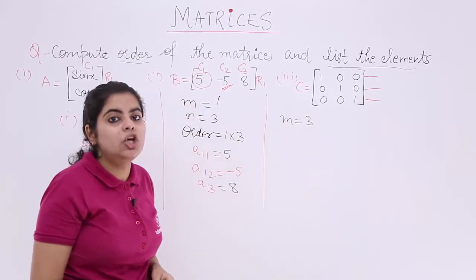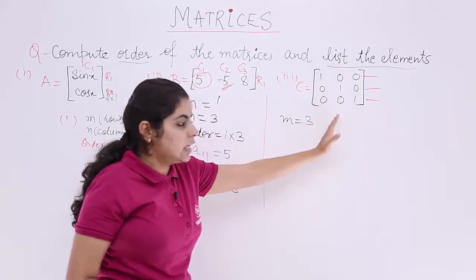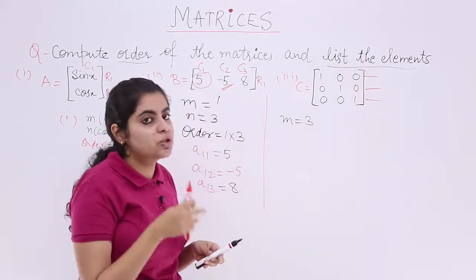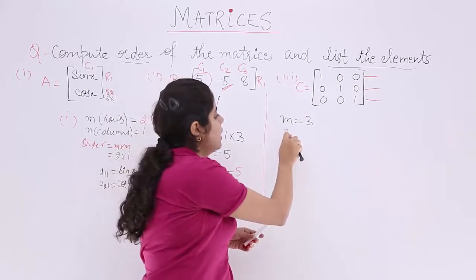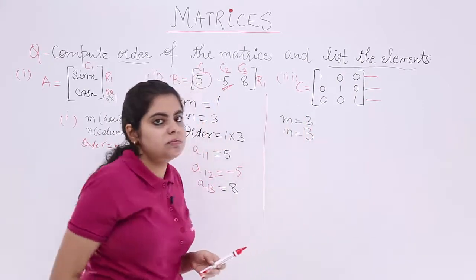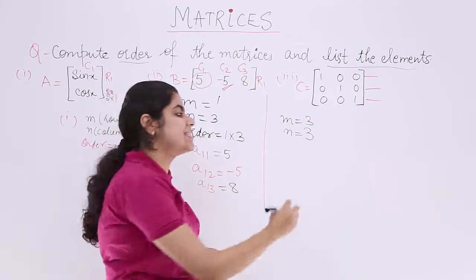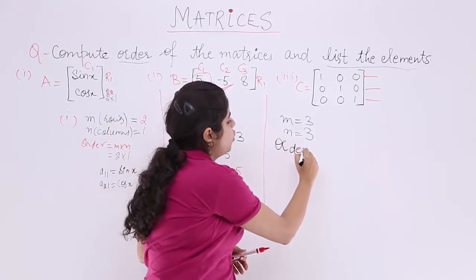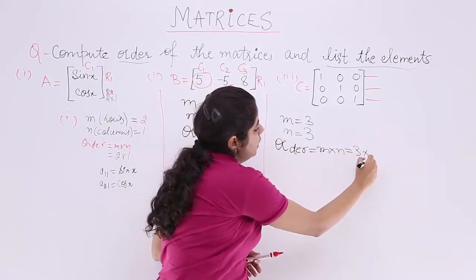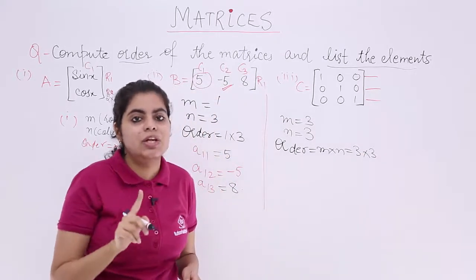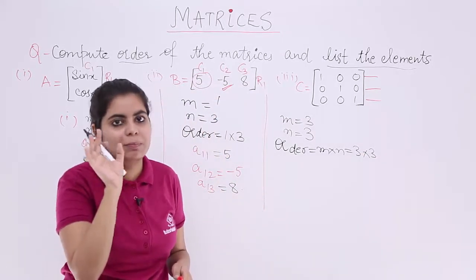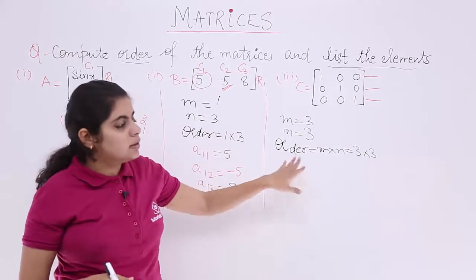How many columns? First column, second column, third column. So again, what is the value of N? N is 3. What is order? Order is M by N, so order means 3 by 3. Do not speak it 3 into 3, it is by. 3 by 3. Order done.